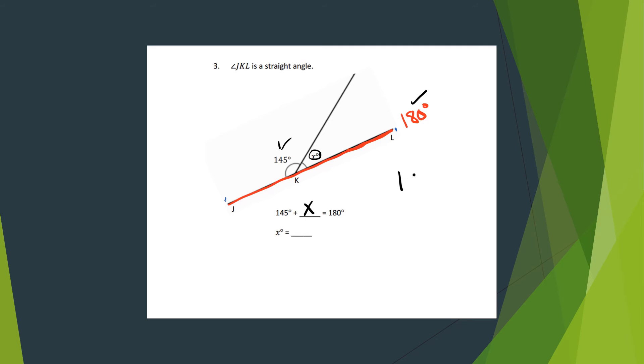In my white space, I can set up 180 minus 145. I cannot do 0 minus 5, so I'm going to unbundle or borrow from the 8. 10 minus 5 is 5, 7 minus 4 is 3, and 1 minus 1 is 0, so I do not have to write that 0 down. So x equals 35 degrees. 145 plus 35 degrees together will equal 180.